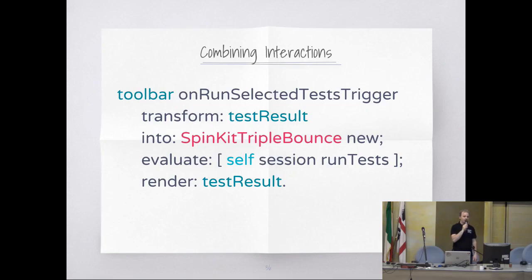This example is: we have a toolbar and we say on run-selected-test trigger, transform this component — which is showing a test result — to show some bouncing balls, and evaluate that on the server. In that case, we will run the test and render back the result.